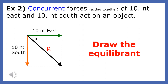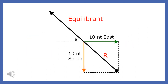Concurrent forces of 10 newtons east and 10 newtons south act on an object — draw the equilibrium. In order to draw the equilibrium for these two forces, all we need to do is measure the length of the resultant and draw the equilibrium with the same length but in the opposite direction. Notice that the equilibrium and resultant form a single line. Whenever we draw the equilibrium, we always include a label.